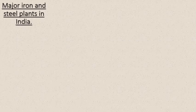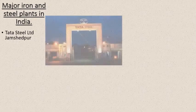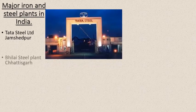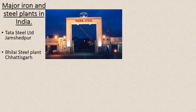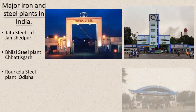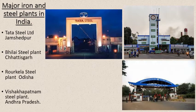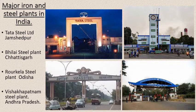We have four major iron and steel plants in our country. Number one: Tata Steel Limited in Jamshedpur. Number two: Bhilai Steel Plant in Chhattisgarh. Number three: Rourkela Steel Plant in Odisha. And number four: Visakhapatnam Steel Plant in Andhra Pradesh. We'll be learning about all four now.